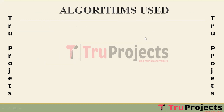The algorithms used in this project include: K-Nearest Neighbor (KNN), a simple yet effective classification algorithm that assigns a class label to a data point based on the majority class among its K nearest neighbors in the feature space.